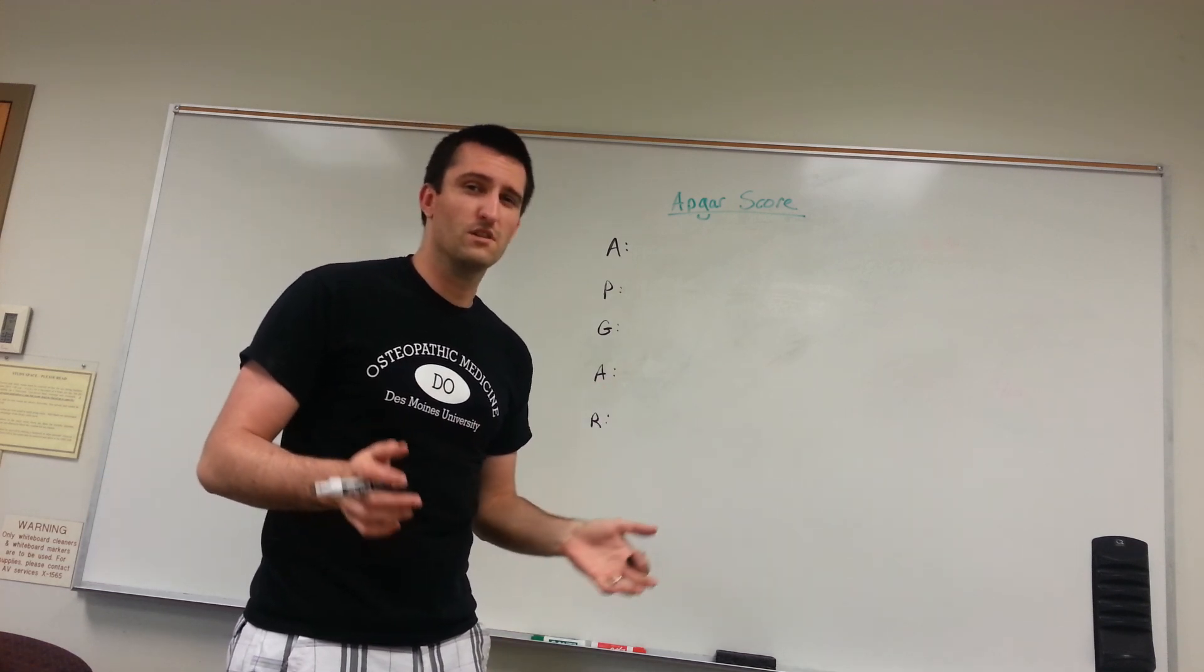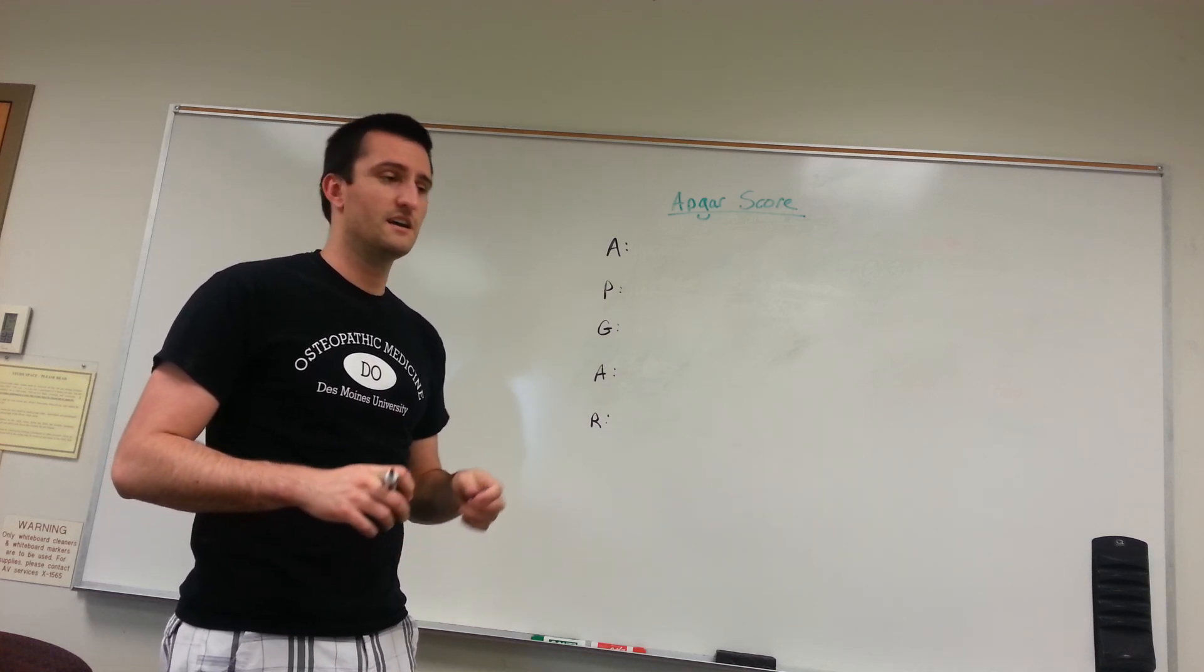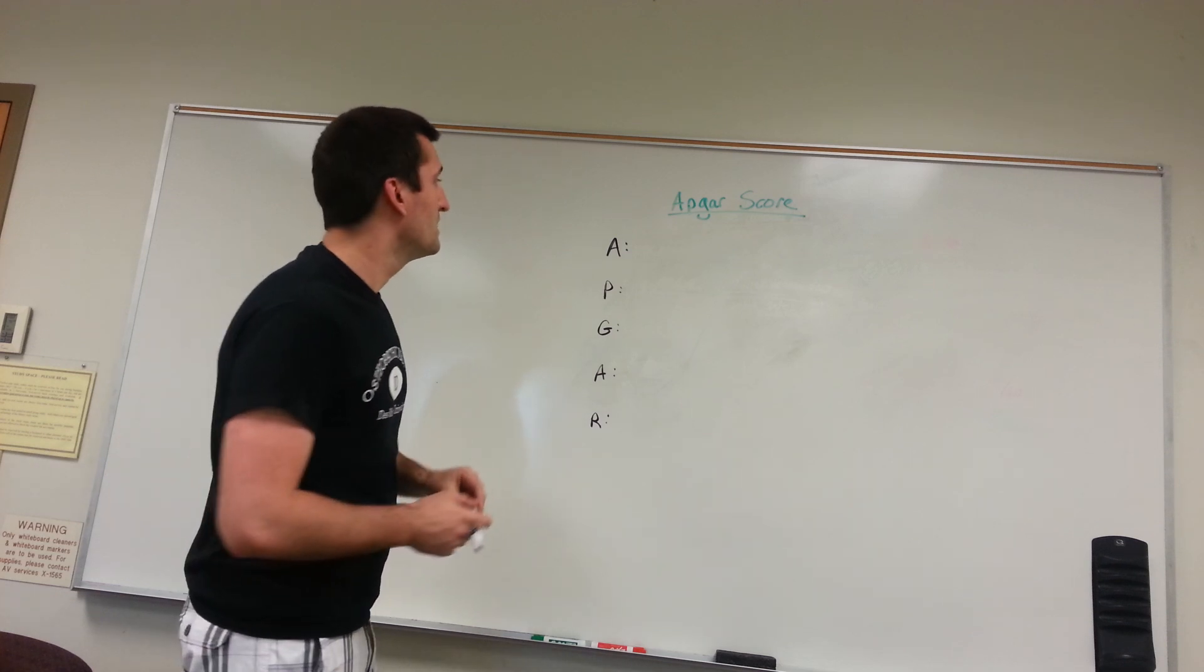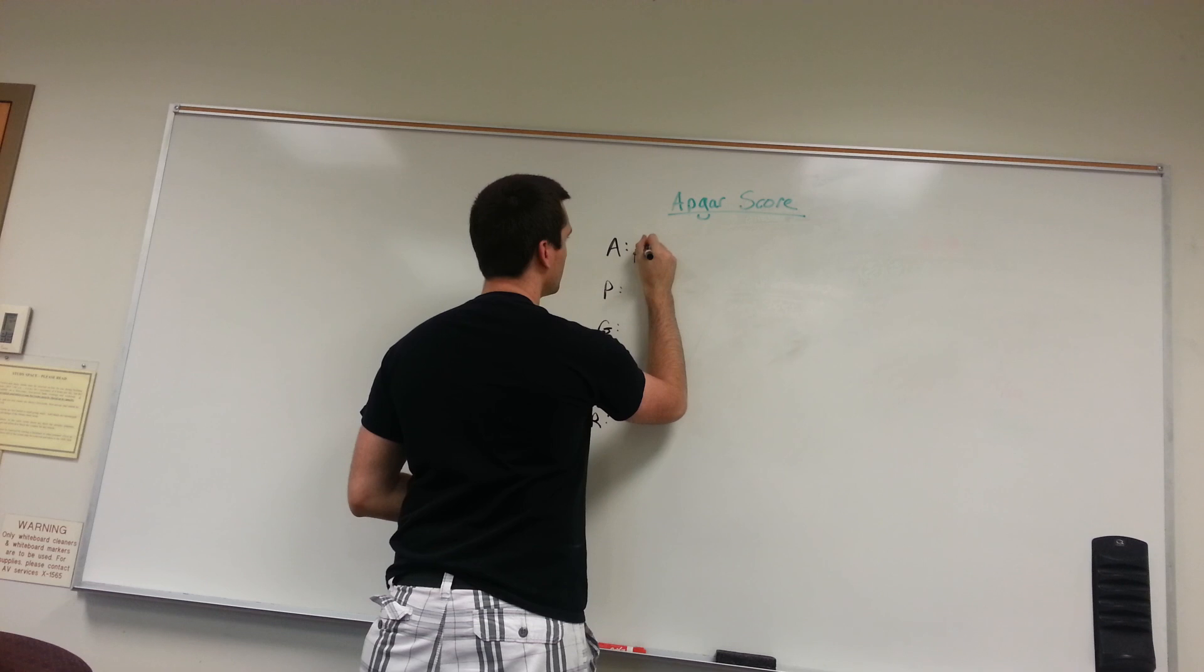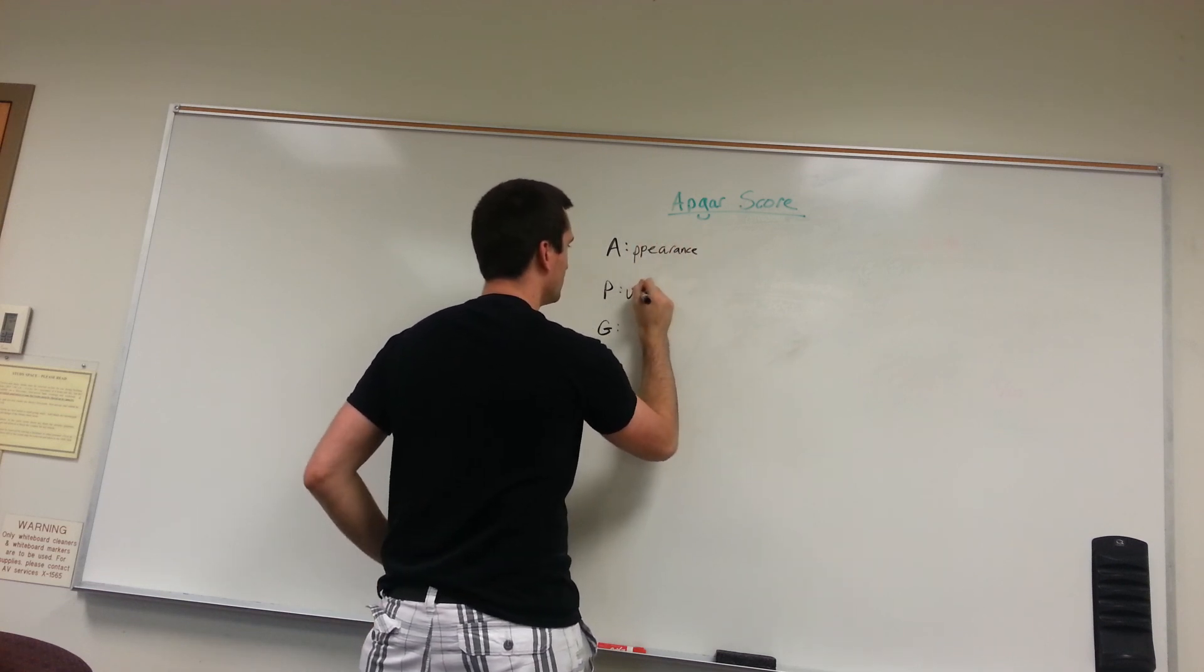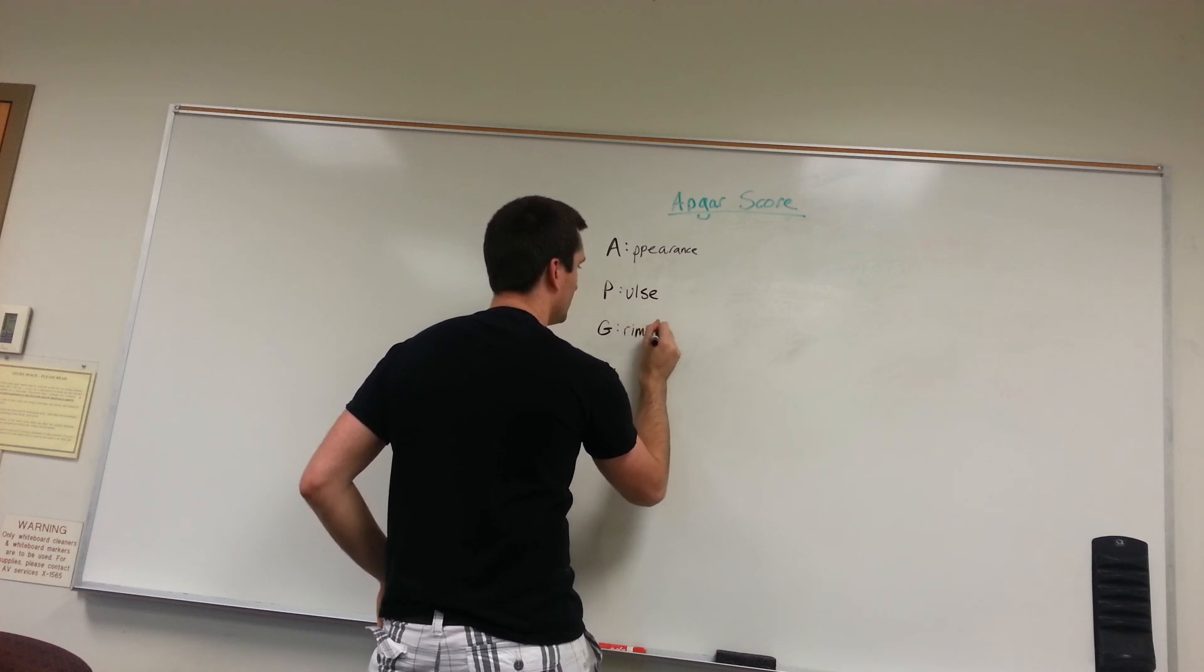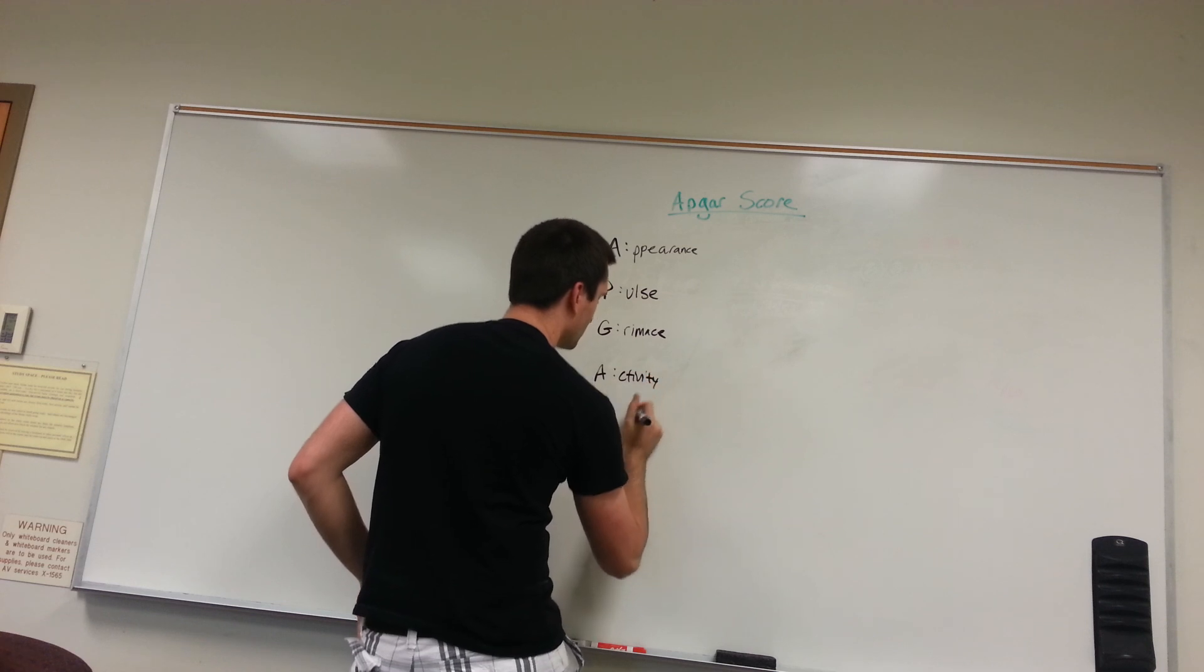When they're four or below four, you're starting to worry. That's not a very good indicator for life. So, what does APGAR stand for? Well, we've got appearance, pulse, grimace, activity, and respirations.